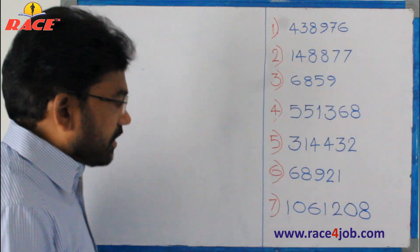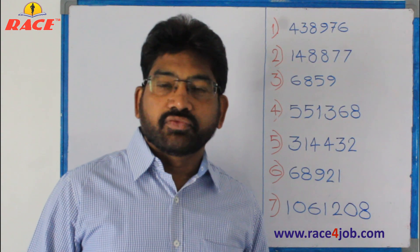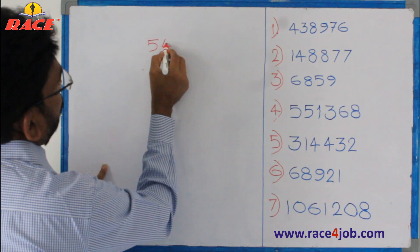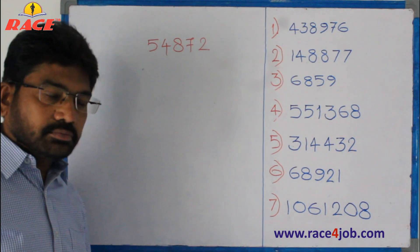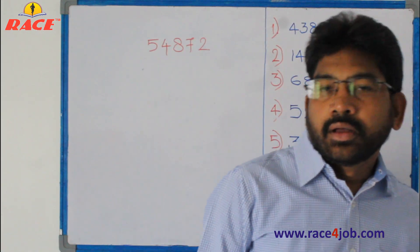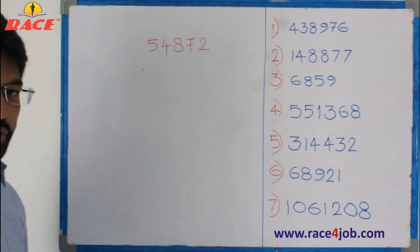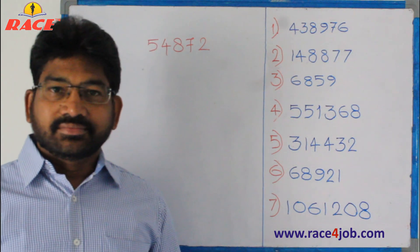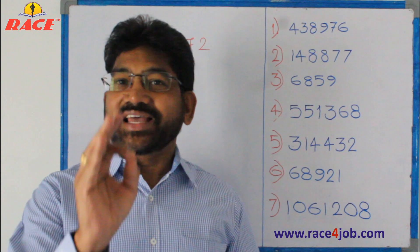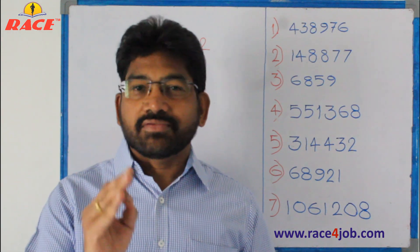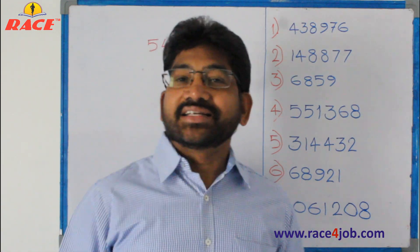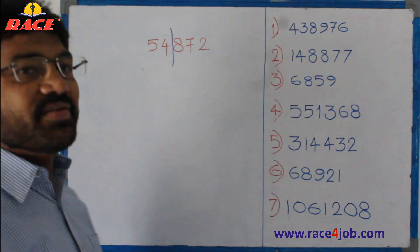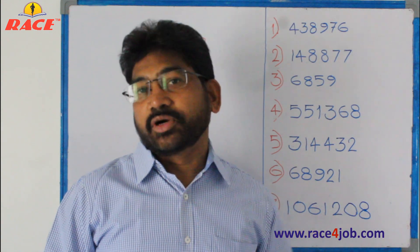I take an example first and explain how to find out the cube root of a number. Say, 54,872 is a perfect cube. To find out the cube root of this number, first what we have to do: divide this number into two parts — but with a condition. When you divide into two parts, the right side part should have exactly three digits. Make sure that the right side part is having three digits. The left side part may have any number of digits; there is no restriction on the left side part. Only the right side part should have exactly three digits.